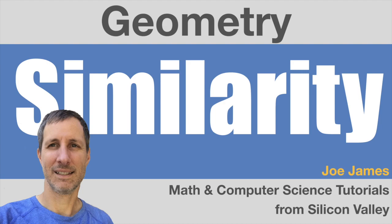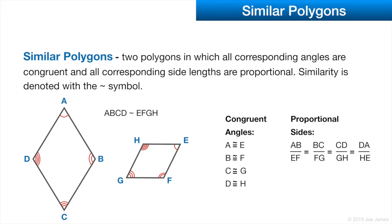Hi, I'm Joe James, and in this video we're going to cover similarity in the geometry series. Two polygons are similar if all corresponding angles are congruent and all corresponding side lengths are proportional. So the side lengths can be different, but they must be proportional — corresponding side lengths. Similarity is denoted with this squiggly line symbol.